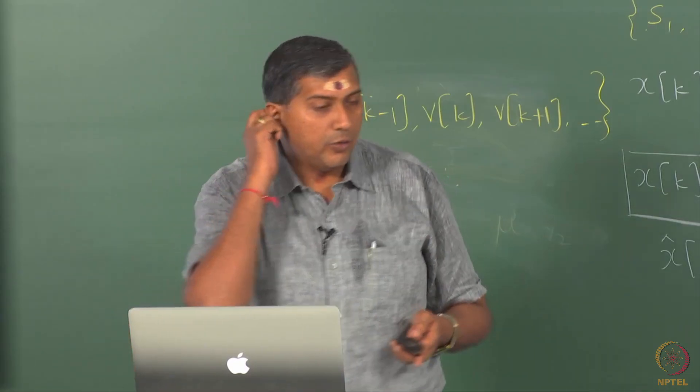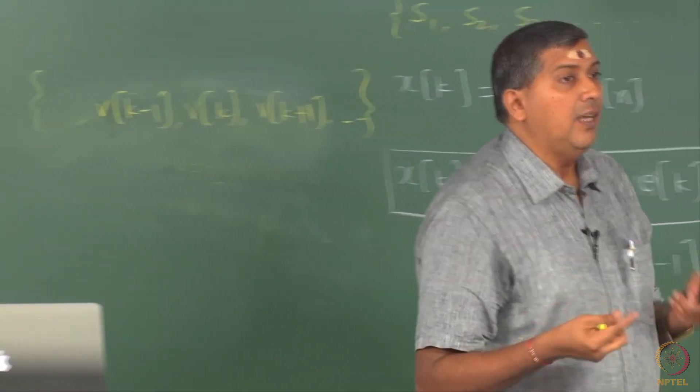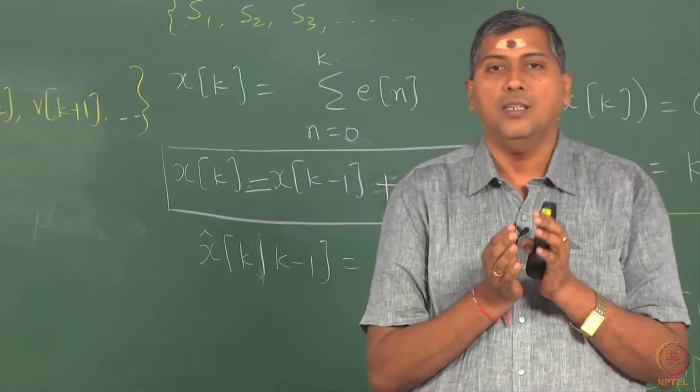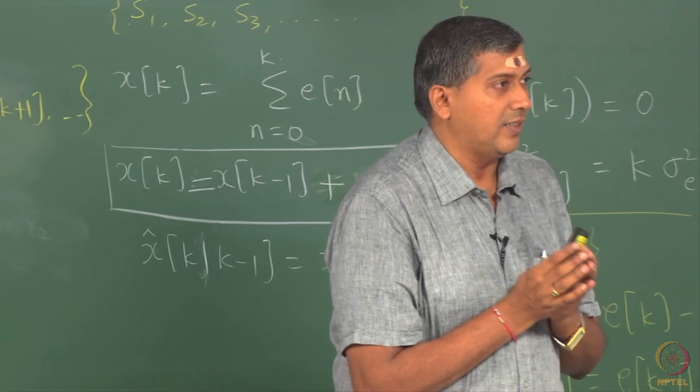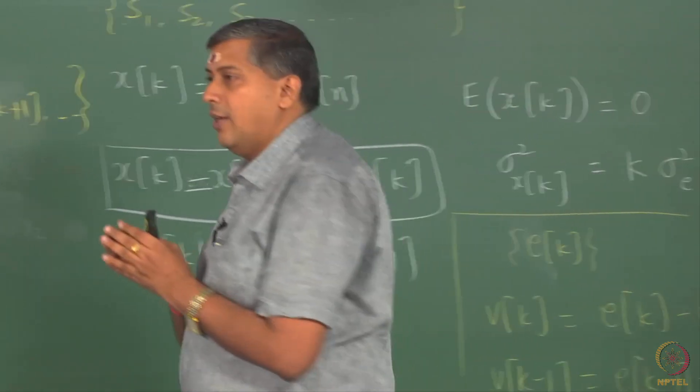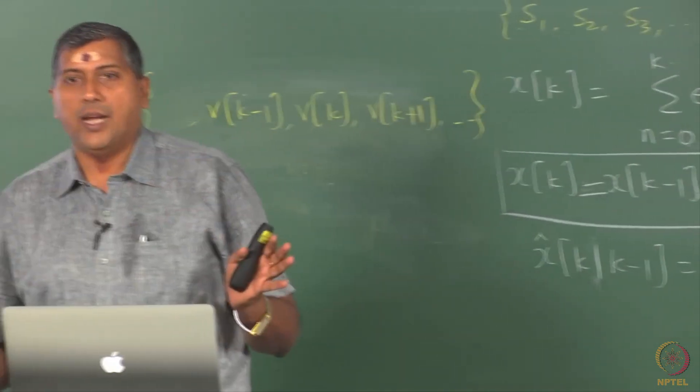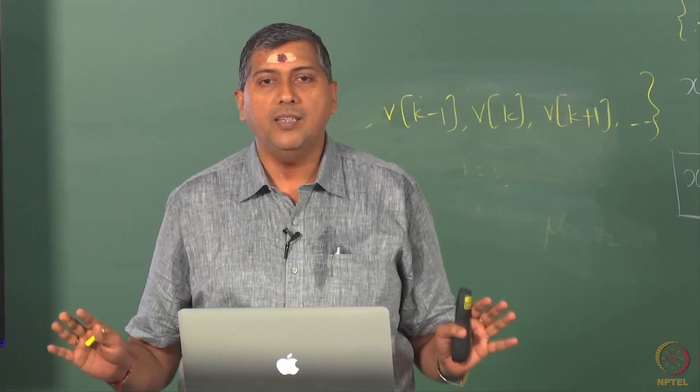So for this purpose we introduce this auto-covariance function. At the heart of this auto-covariance function, we have covariance as a measure. You should not forget that. There is nothing more complicated about this. I am given a series.